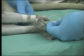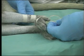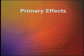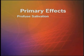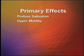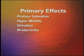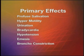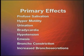It binds reversibly to acetylcholinesterase. Primary effects at the post-ganglionic parasympathetic nerves, also the muscarinic sites, include profuse salivation, hypermotility, urination, bradycardia, hypotension, miosis, bronchoconstriction, and increased bronchial secretions.